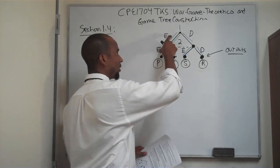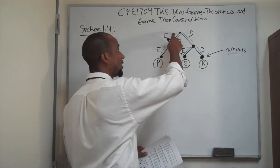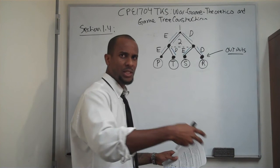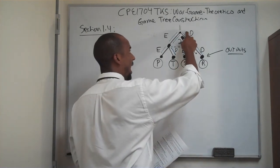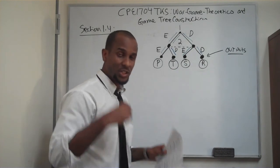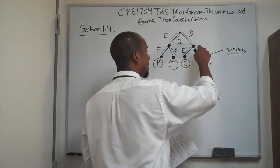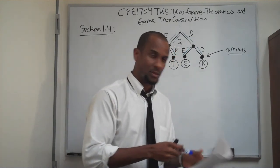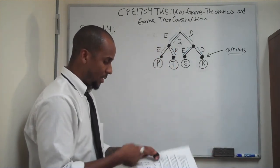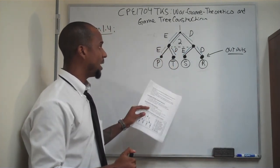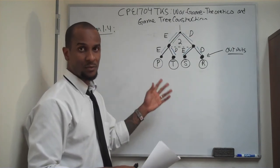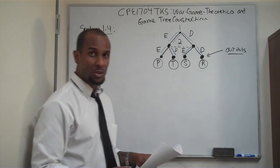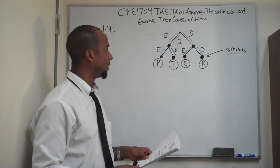Punishment is when we both choose to escalate. Temptation is when I choose to escalate but they don't — I've given into the temptation of being a bully. When I choose to de-escalate but they escalate, I'm a sucker — I should have had my guard up. And if we both choose to de-escalate, we're rewarded. This particular tree is a combination of many aspects of game theory: a little prisoner's dilemma, a little escalation and conflict resolution war theory, a little game tree construction.